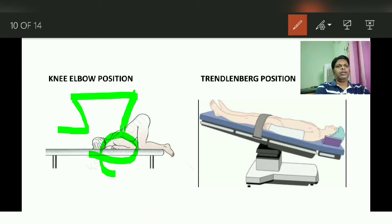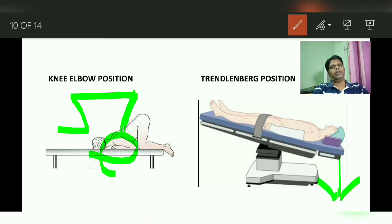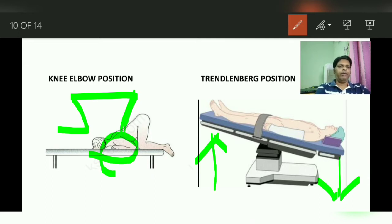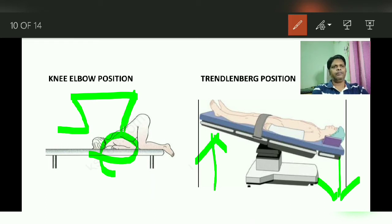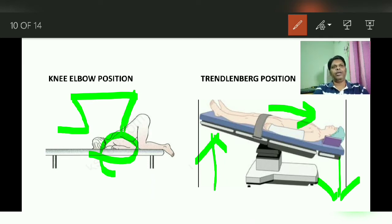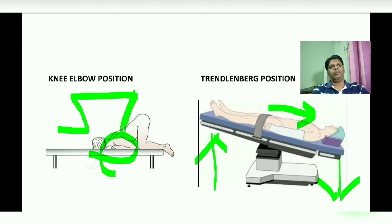The next position is the Trendelenburg position. Here the head end has to be kept at a lower level and the foot end has to be elevated. This position is ideally useful when you are doing pelvic surgery like gynecological surgeries, because all the bowel will go into the upper part of the abdomen, giving you more space to operate. You can also use this position for vascular surgeries in the lower limb.